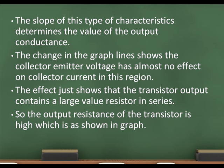The slope of this type of characteristics determines the value of the output conductance. The change in the graph lines shows that the collector emitter voltage has almost no effect on collector current in this region.